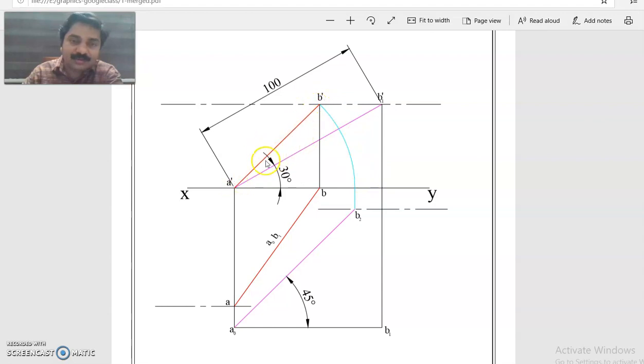So this is A dash B dash, the front view. Now, if this is B dash, B has to come on the same projector, and B has to be on the VP. So any point on VP will have its top view on the XY line. So B is located.